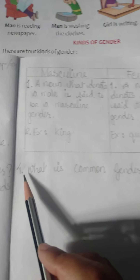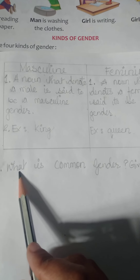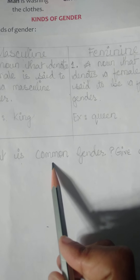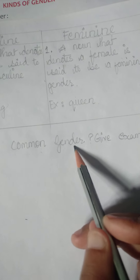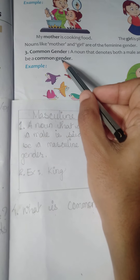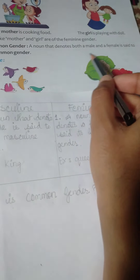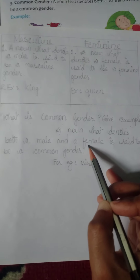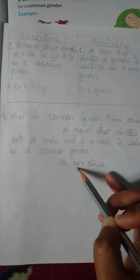Your next question, question number four, is: What is common gender? Give an example. Common gender: a noun that denotes both a male and a female is said to be a common gender. For example, bird.